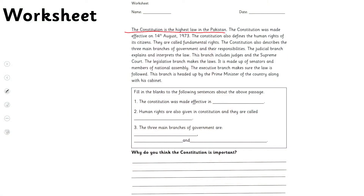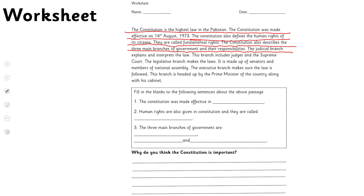The constitution is the highest law in Pakistan. The Constitution was made effective on 14th August 1973. The constitution also defines the human rights of the citizens — they are called fundamental rights. The constitution also describes three main branches of government and their responsibilities.